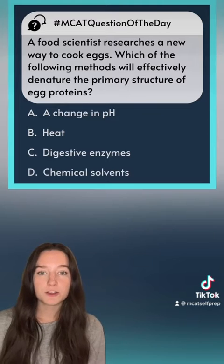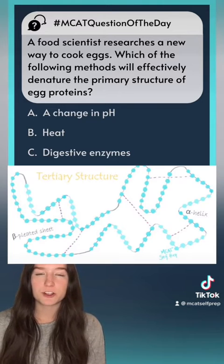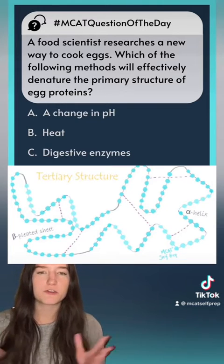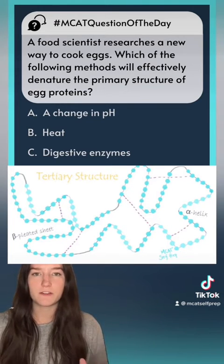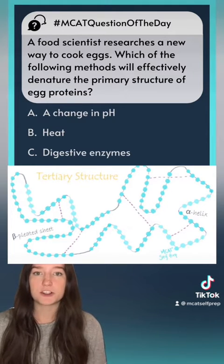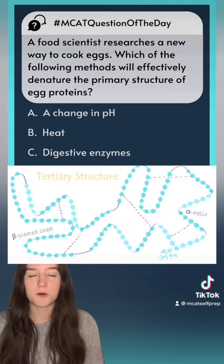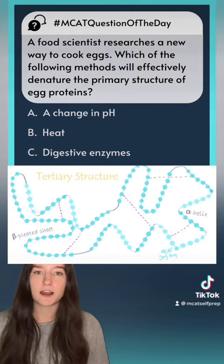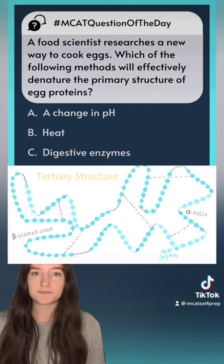Then we have the tertiary structure, which is basically the 3D arrangement of the entire molecule. The interactions that make the tertiary structure include disulfide bridges, hydrogen bonding, hydrophobic interactions, dipole-dipole, and ionic bonding.